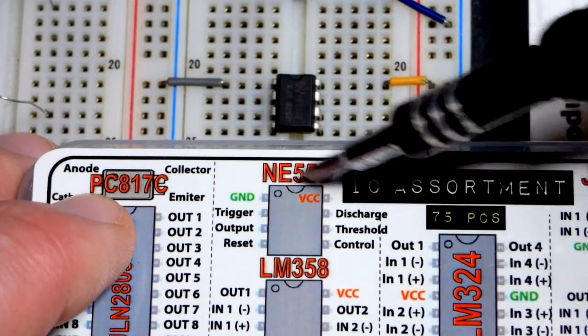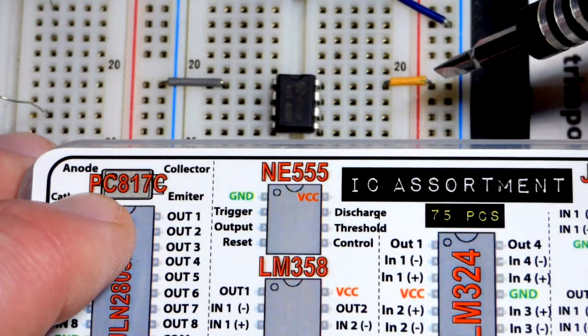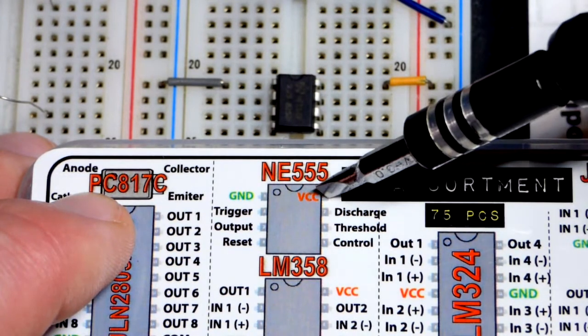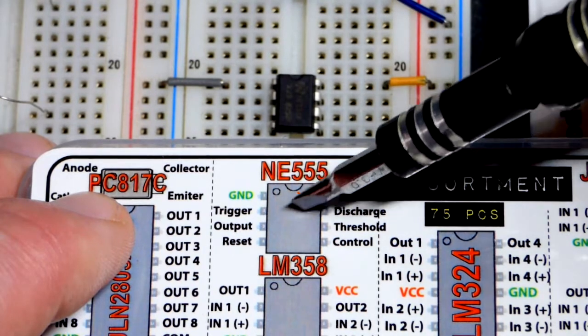With probably every integrated circuit, you need to power this. It can use a wide range of power supply voltages. We're going to use 5 volts. The positive side comes to pin number 8 up here.